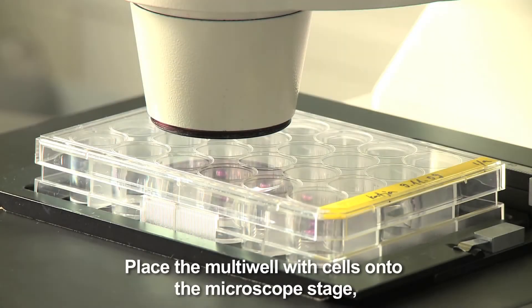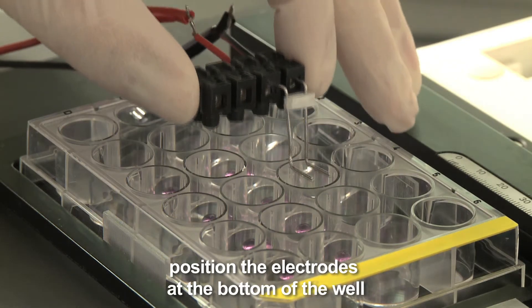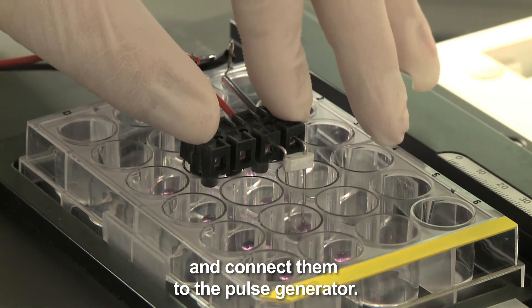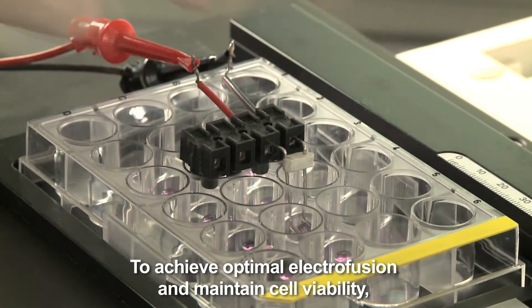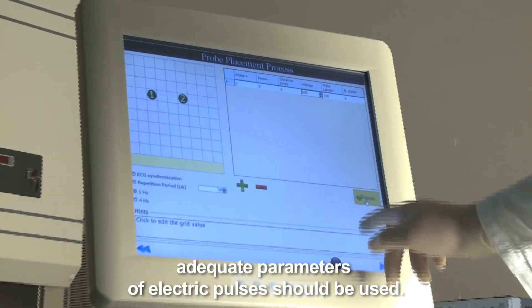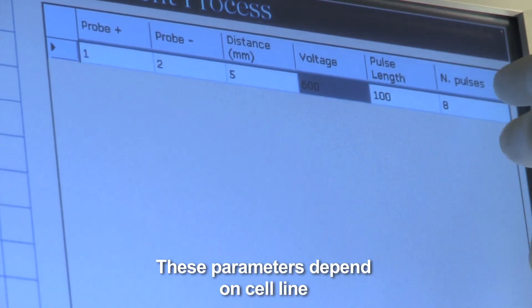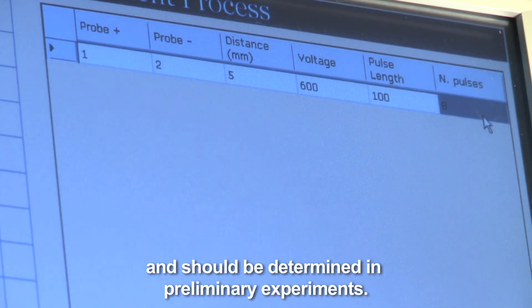Place the multiwell with cells onto the microscope stage. Position the electrodes at the bottom of the well and connect them to the pulse generator. To achieve optimal electrofusion and maintain cell viability, adequate parameters of electric pulses should be used. These parameters depend on cell line and should be determined in preliminary experiments.